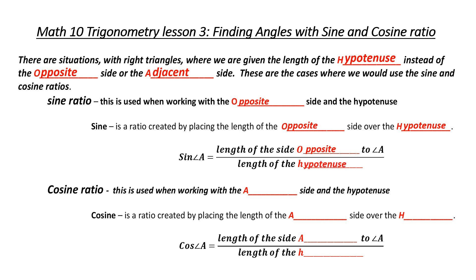The cosine ratio, on the other hand, is used when we're working with the adjacent side and the hypotenuse. Cosine is a ratio created by placing the adjacent side over the hypotenuse. As a formula, we write it as: cos of angle A equals the length of the side adjacent to angle A divided by the length of the hypotenuse.